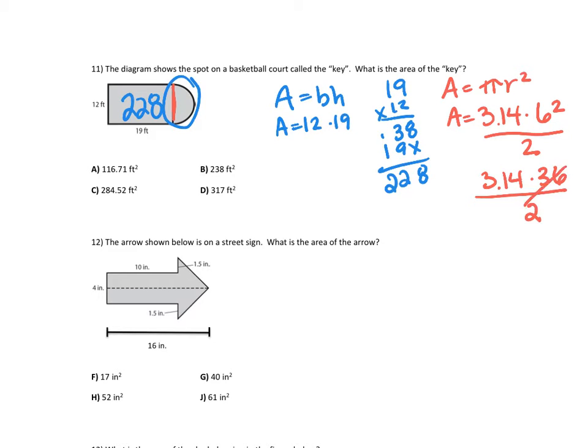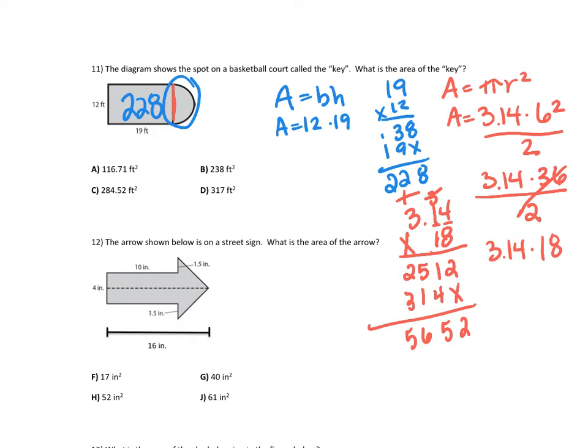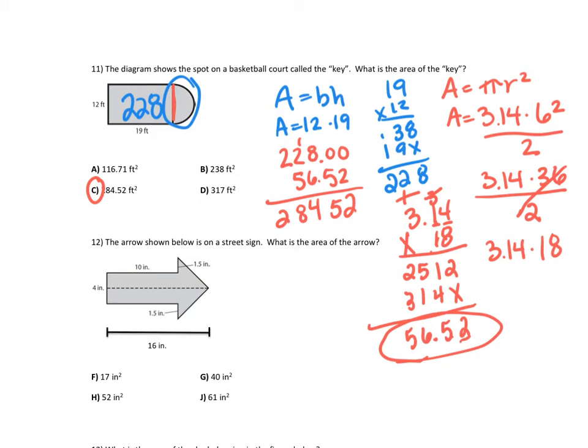So 3.14 times 36 divided by 2. I'm going to eliminate what I know, 36 divided by 2, which is 18. So 3.14 times 18. 8 times 4 is 32, 8 times 1 plus 3 is 11, and then we got 25 right there. 1 times 4, 1 times 1, 1 times 3, and I have 56.52. I'm going to take this number and add it to 228. I have to make sure I line up my dot. And then we have 284.52, which matches answer choice C.